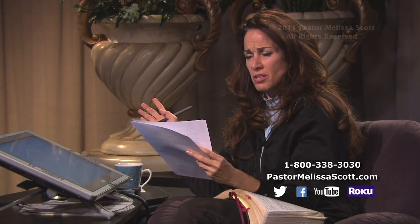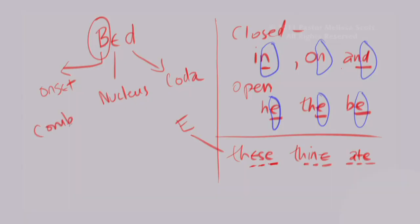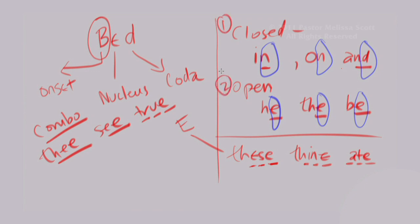The fourth type is the combination syllable — sometimes two or three vowels plus a consonant. For example, the word 'thee': consonant, vowel, vowel. Or 'true': consonant, vowel, vowel. So open and closed are the ones you need to know, but the e-class and the combo are numbers three and four.